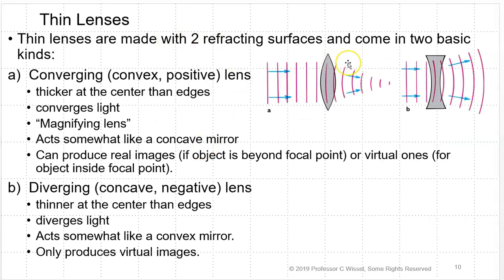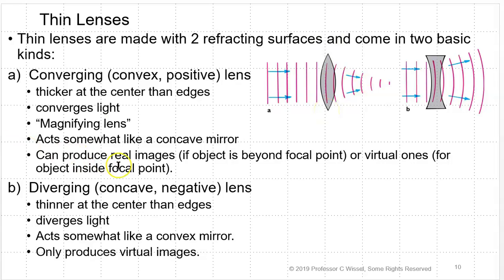Thin lenses are made with two refracting surfaces and come in two basic kinds. Converging lenses, which are convex or positive lenses, are thicker at the center than at the edges. They converge light — when parallel light comes in, it converges to a single point called the focal point. It acts as a magnifying lens. This is why a kid with a magnifying lens can burn ants — the sunlight is brought to a sharp focus. This acts like a concave mirror and can produce real images if the object is beyond the focal point, or virtual ones for objects inside the focal point.